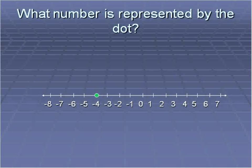Looking at this number line here, what number is represented by the dot? You can see that the dot is located right there, and that represents the point, or the number, negative 4. So that dot represents negative 4.